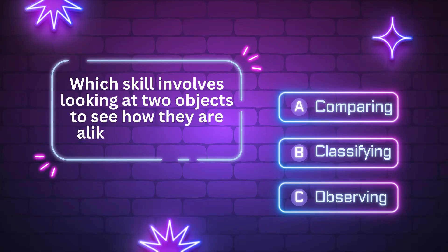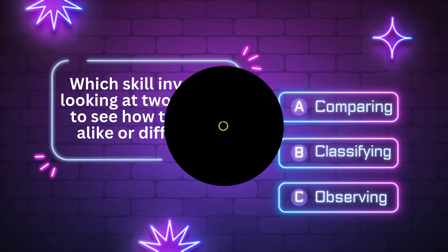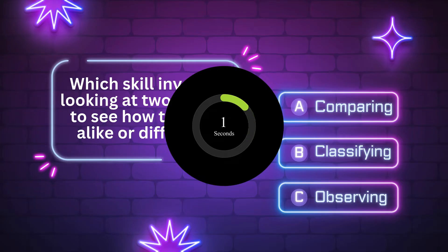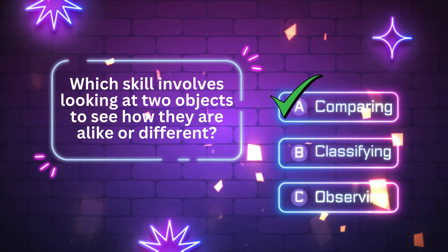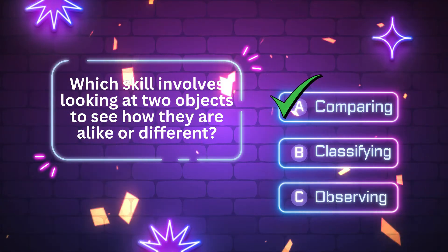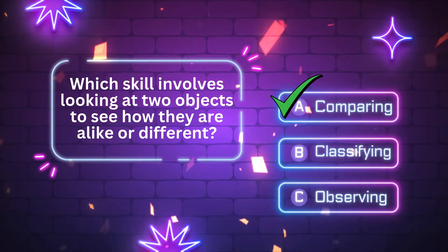Which skill involves looking at two objects to see how they are alike or different? A. Comparing. B. Classifying. C. Observing. The answer is letter A. Comparing. Good job. Let's move on to the next question.